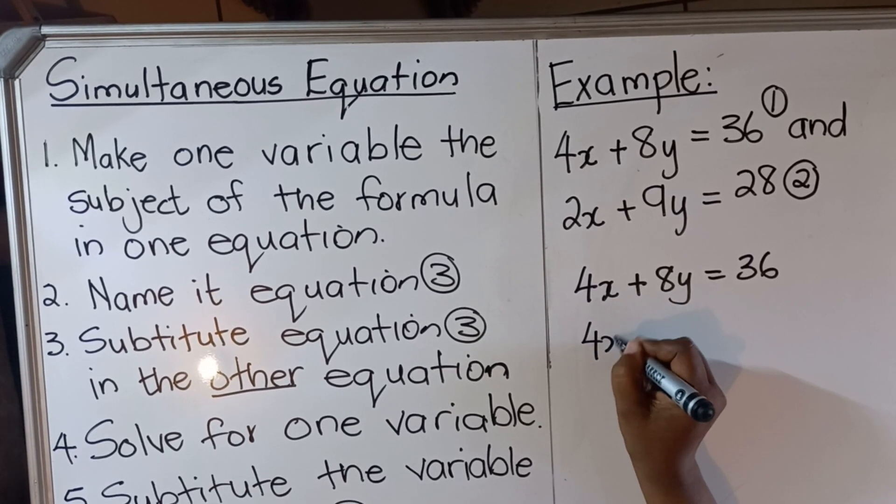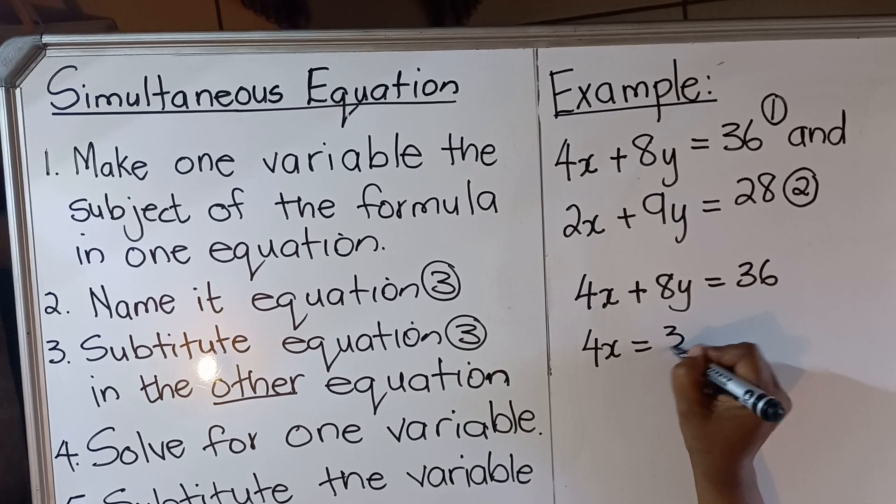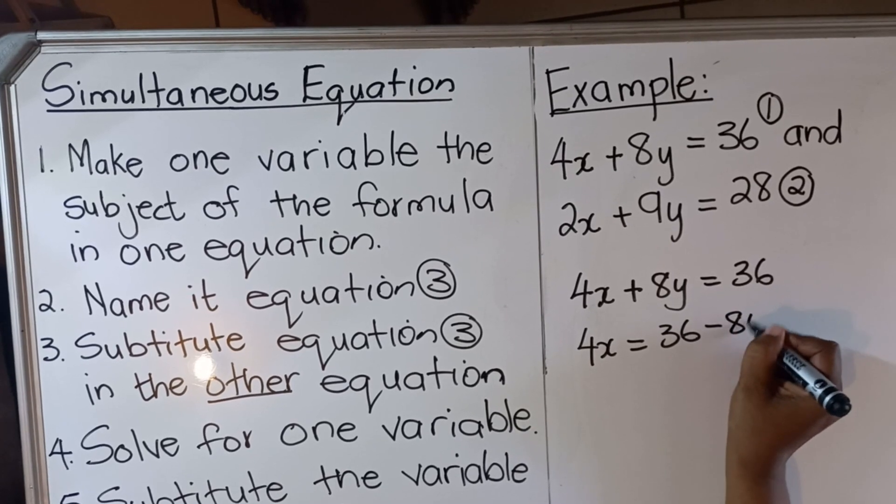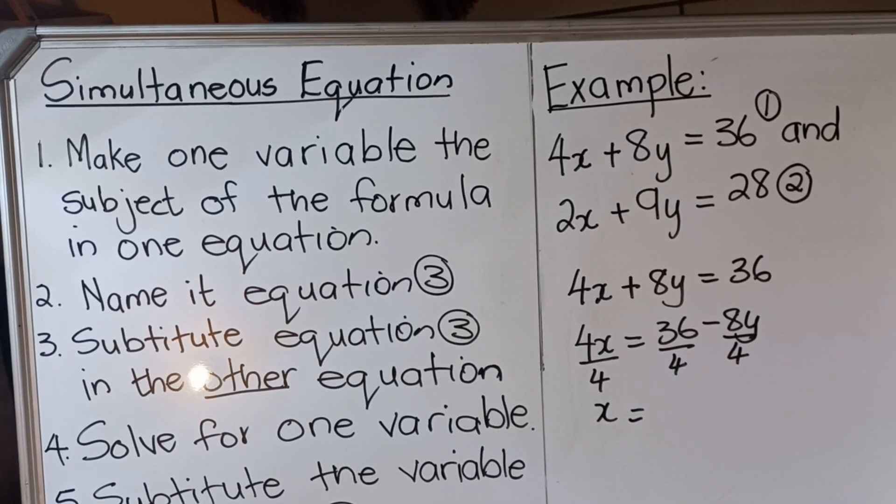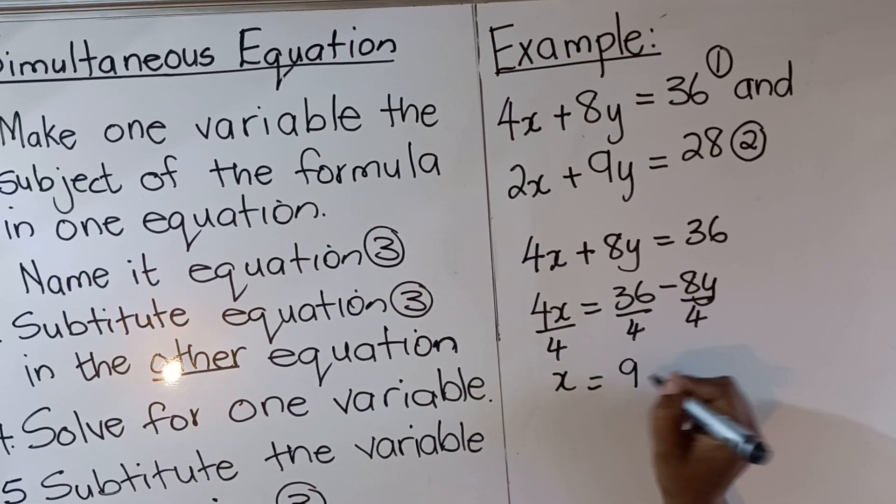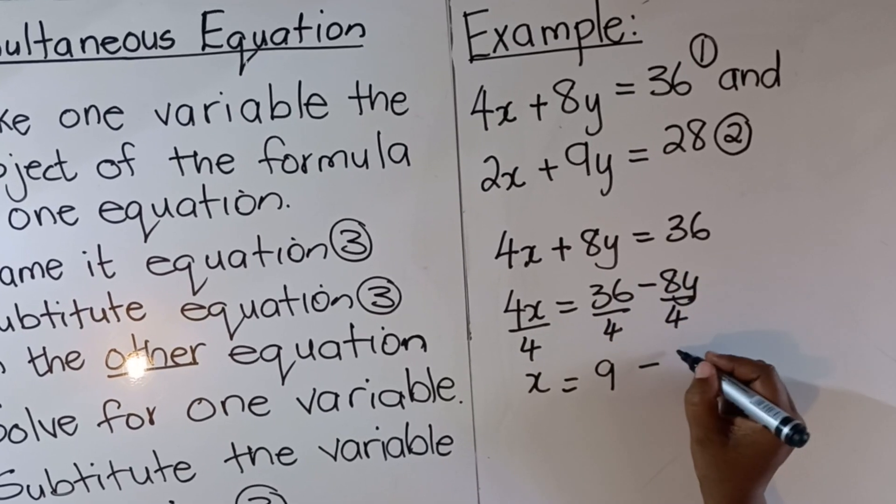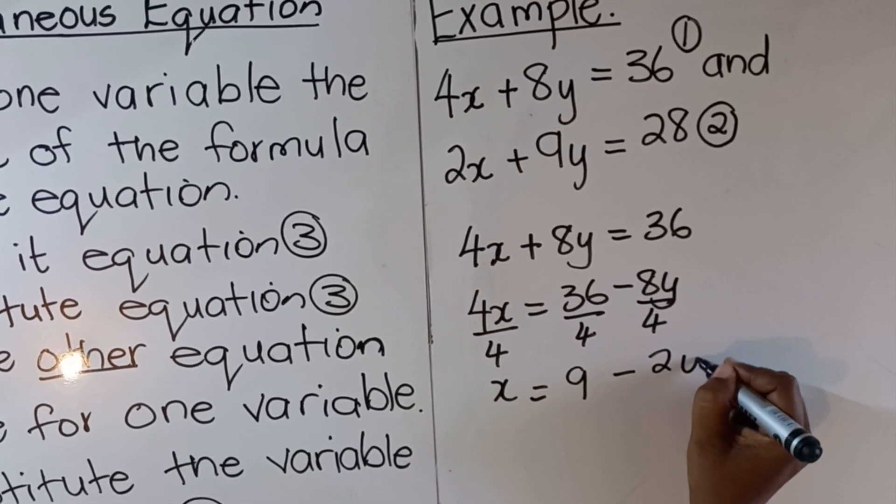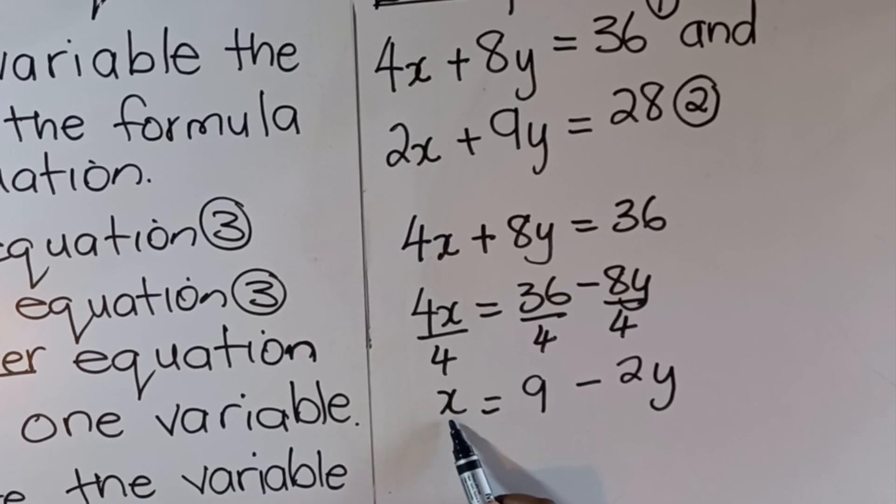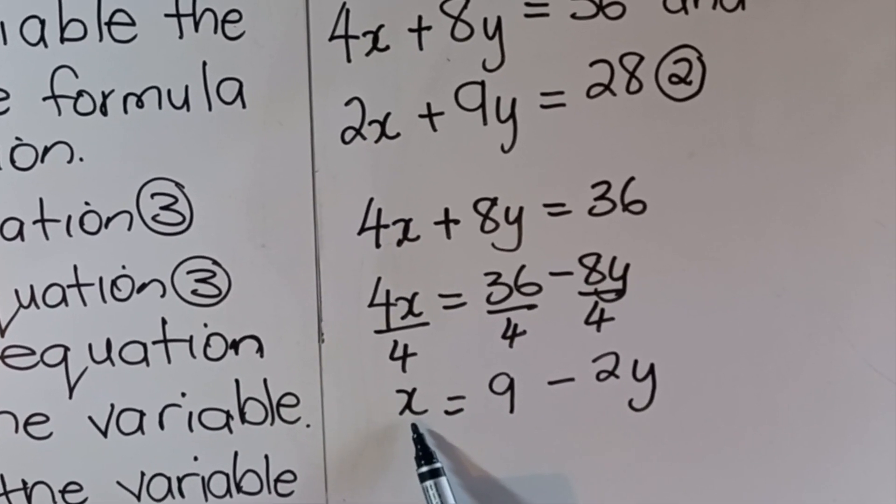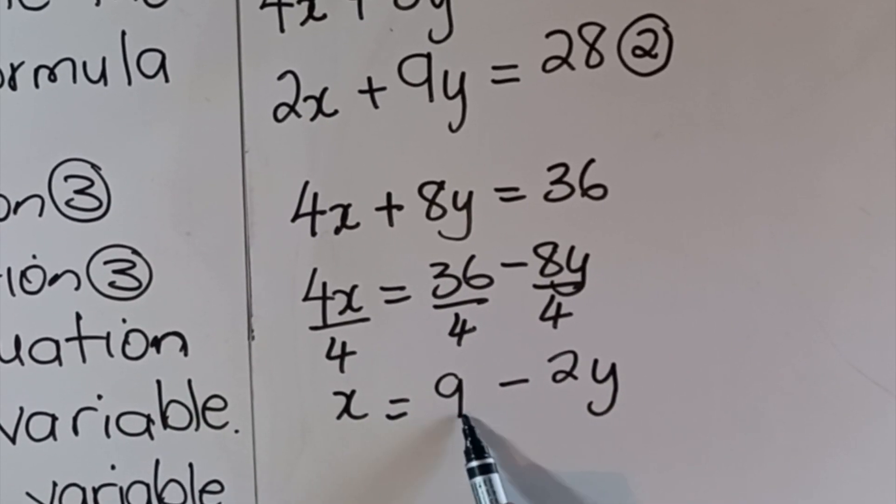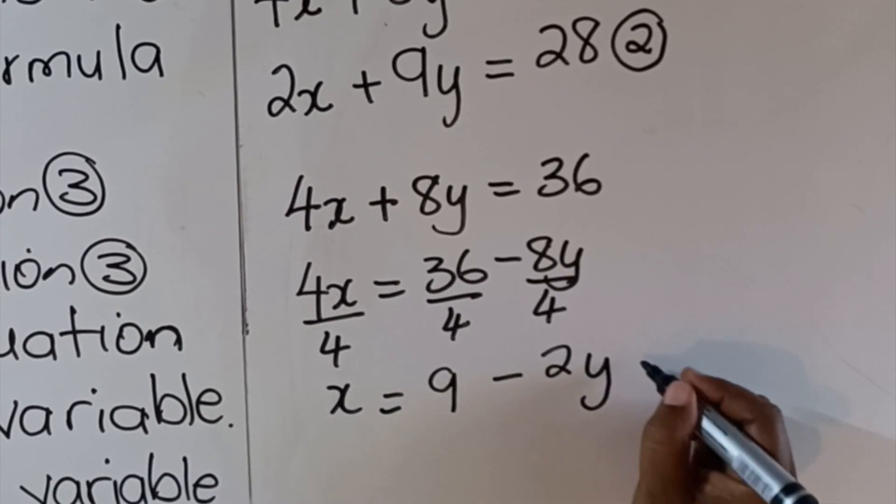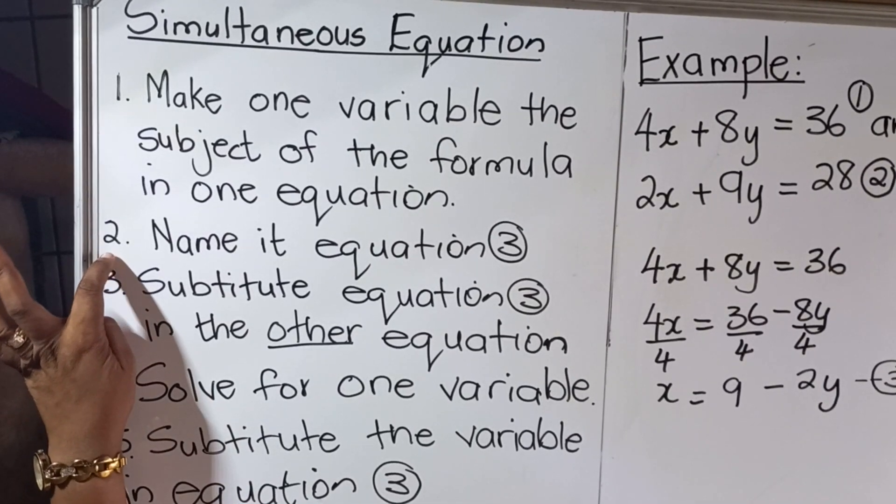I'm deciding to make x the subject of the formula, so I'm going to have 4x = 36 - 8y, divide by 4 everything. So x = 36 ÷ 4, which is 9, minus 8 ÷ 4, which is 2y. So I have made x the subject - one variable. In this case it's x, you could do y. X is the subject of the formula, so x = 9 - 2y.